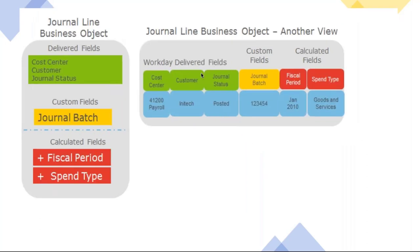Let me give a finance example to understand the object model in both Workday and finance contexts. Suppose there is a journal line business object — this is the primary BO. It has delivered fields like cost center, customer, and journal status. Maybe the client also wants to track 'journal batch,' which Workday doesn't support natively, so we configure a custom object on the journal line. Then we have calculated fields — for example, fiscal period and spend time, derived from the accounting date or accounting period.